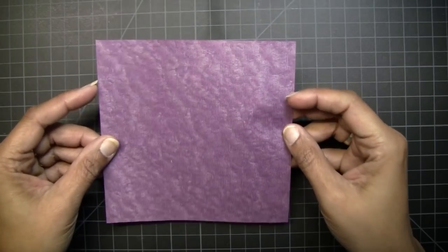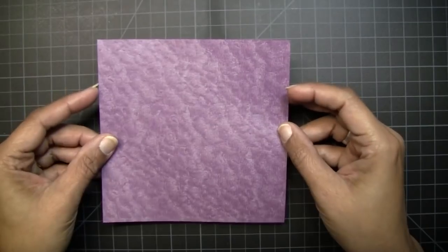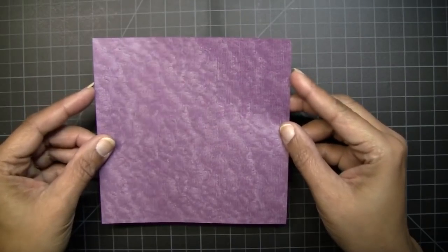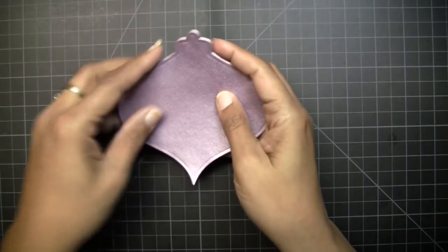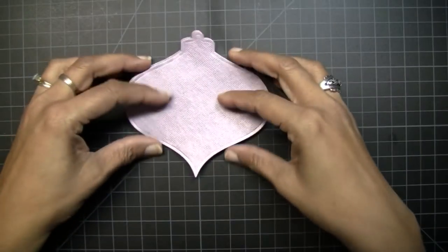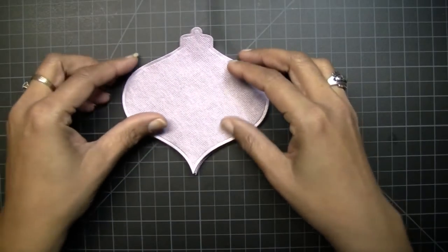So from my paper, I need to cut 18 die cuts. I've already gone ahead and done that. The next step is to fold the dies.